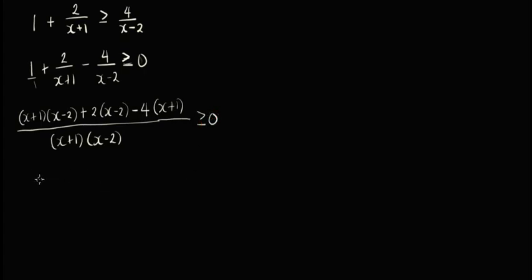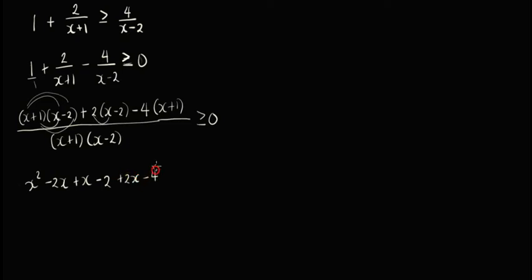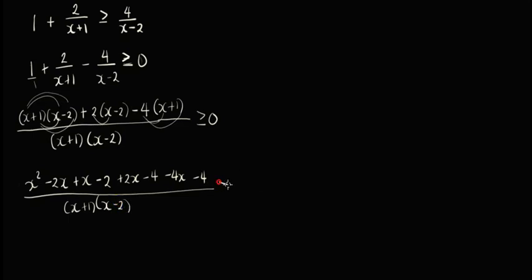Let's simplify the numerator. We will distribute everything: so we will get x squared, then x times negative 2 that's negative 2x, plus x. Then negative 2x plus x, 1 times negative 2 that's negative 2, 2 times x is 2x, 2 times negative 2 that's negative 4, then negative 4x, and negative 4 — all over x plus 1 times x minus 2, is greater than or equal to 0.